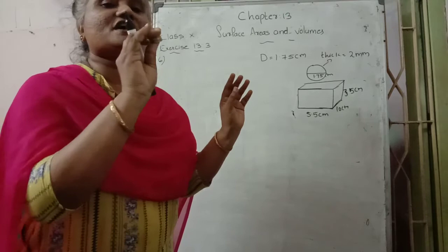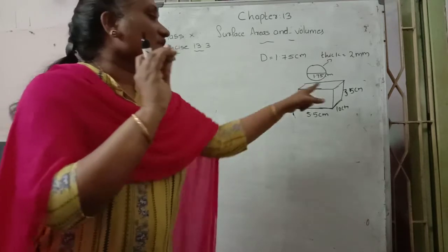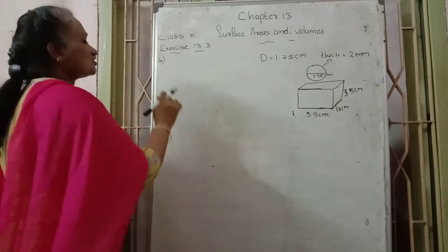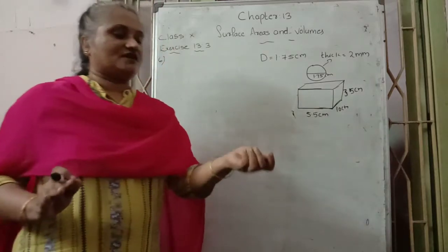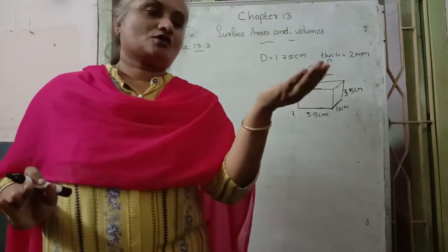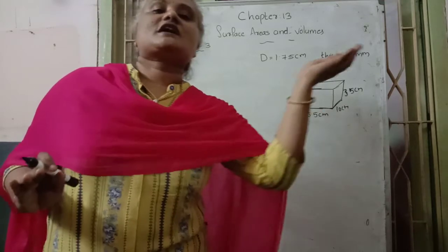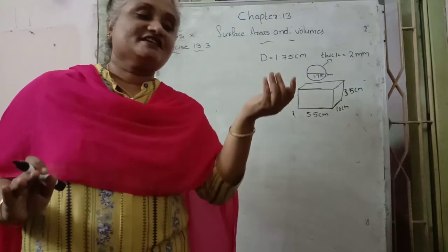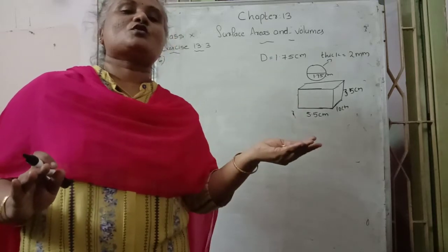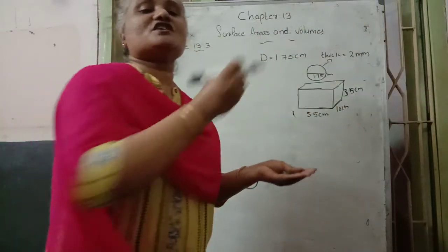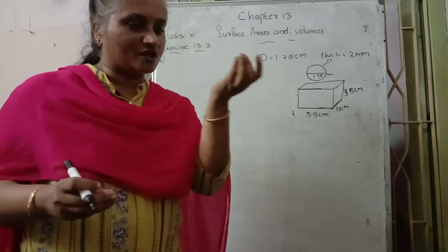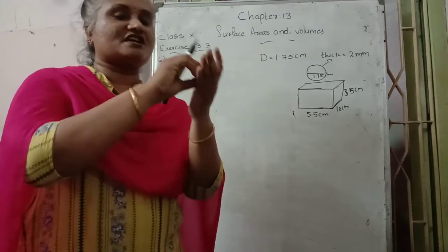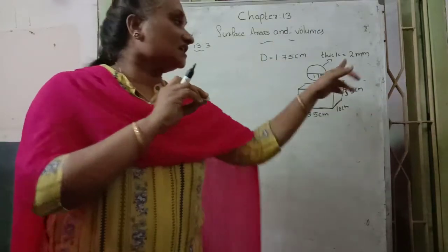How many such silver coins are required for making this measurement cuboid? Because the same coin is used to convert to a cuboid shape, that's why volume of n coins is equal to the volume of the cuboid.